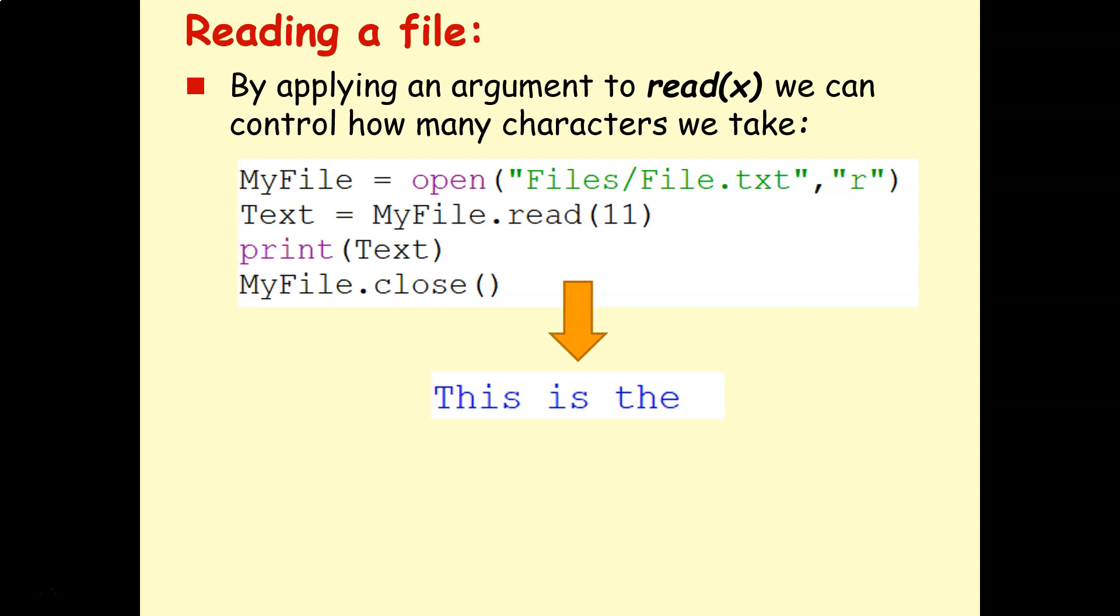We can also add a number into the brackets after dot read to control how many characters we take. So in this case, I've said text equals my file dot read and I've said 11. So it'll display the first 11 characters, including the spaces. So maybe you just want to take a few of the characters from your text string. That's how you do it.